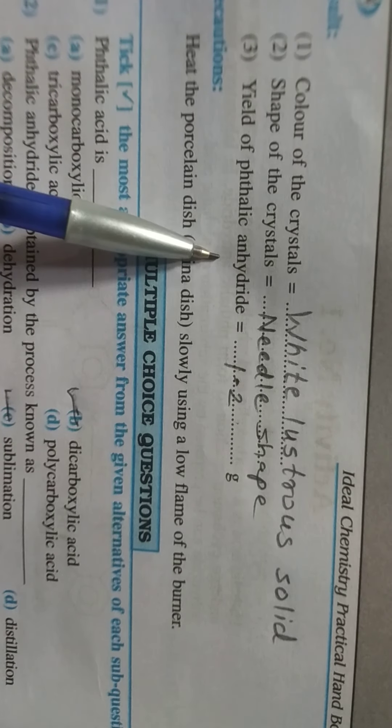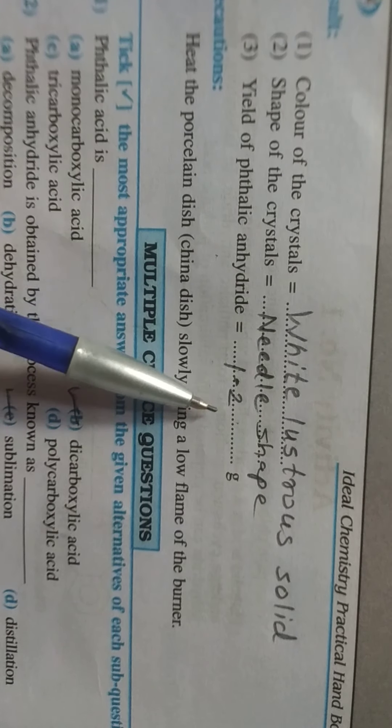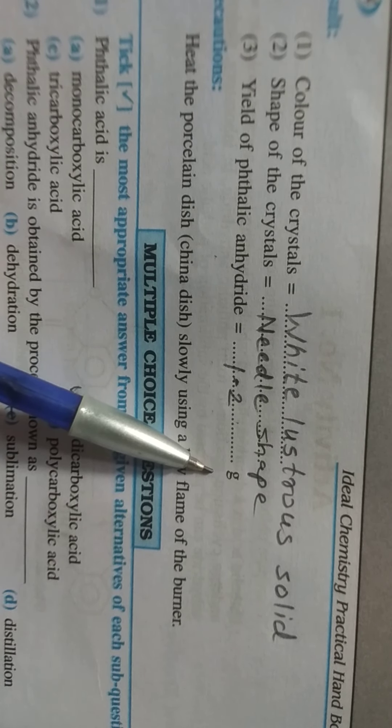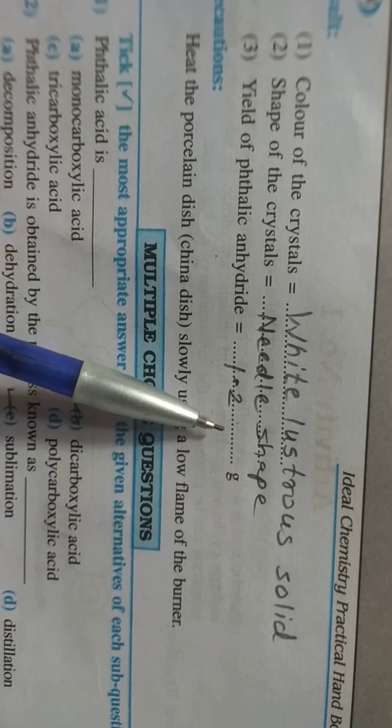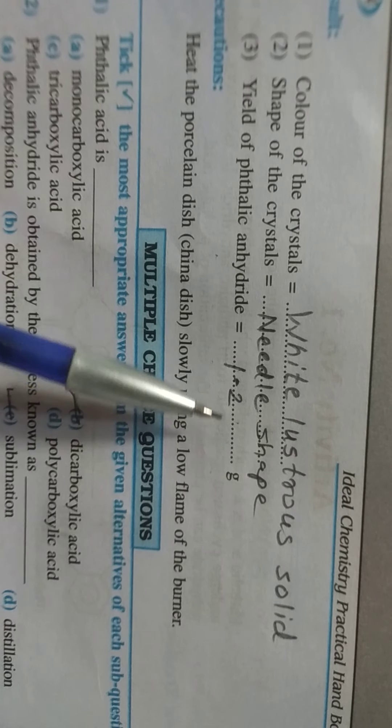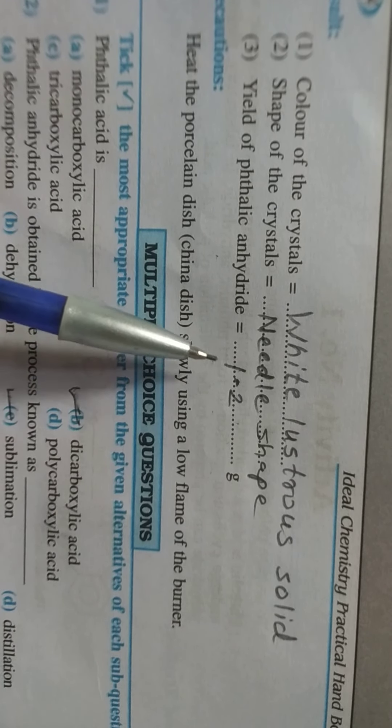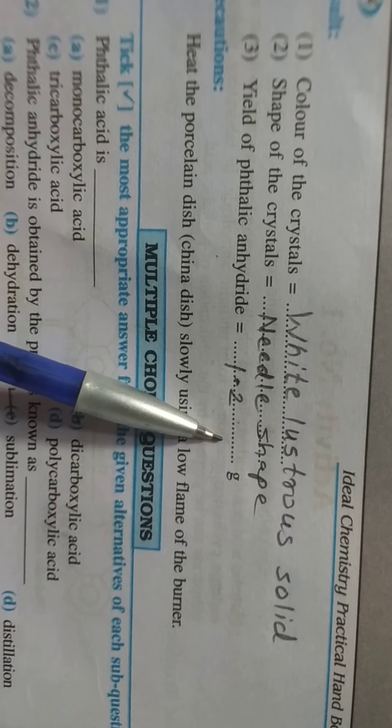And yield of the phthalic anhydride is 1.2 grams, because of loss of water molecule. That's why we obtain 1.2 grams of phthalic anhydride.